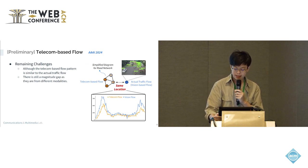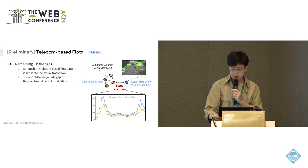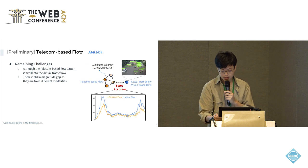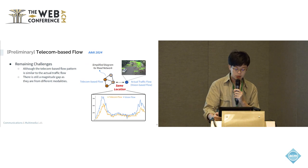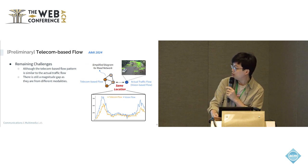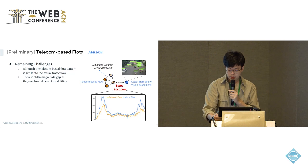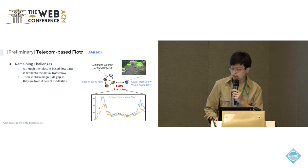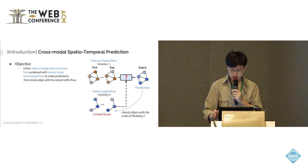However, the telecom-based flow is obtained from mobile users, which may not exactly align with the actual traffic flow on the road. For example, when we deploy a camera on a road to capture the traffic flow and compare it to the telecom-based flow at the same location, we observe that although the two flows — the orange line and the blue line — have a similar pattern, there is still a gap between them because the two flows come from different modalities.